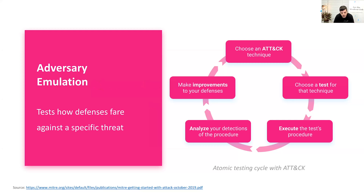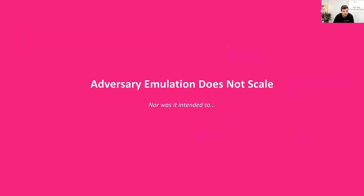Adversary emulation, for those of you who need a recap, is one of the most popular and useful use cases for the ATT&CK framework. It basically allows an organization to test their defenses against specific threats. The ATT&CK framework can be very beneficial to measure, test, and make improvements to defenses based on different adversary tactics, techniques, and procedures. But the problem with adversary emulation is that it doesn't scale — nor was it intended to.